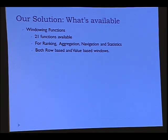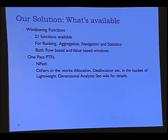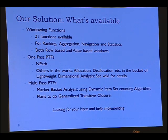To summarize what's available today: for windowing functions, there are 21 functions available — ranking, aggregation, navigation, statistics. Windows can be both row-based and value-based — for example, 'five preceding, seven succeeding' is row-based, or 'five less and seven more' is numeric value-based. We support PTFs; I showed NPath and we're working on more PTFs in the dimensional analysis bucket — things like allocations, deallocations. There is a whole class of PTFs called multipass — we have partial implementation of market basket analysis and plan to do generalized transitive closure. We are always looking for input from people on what else they need.